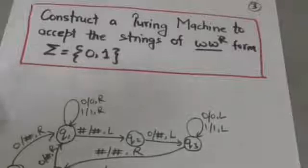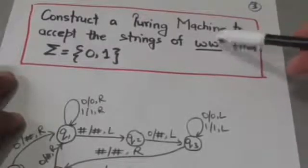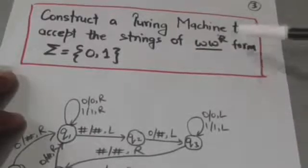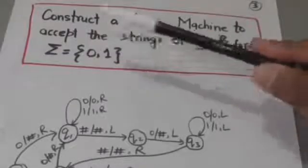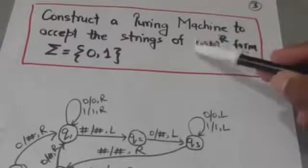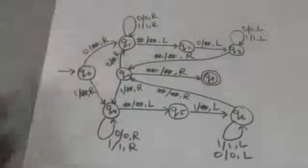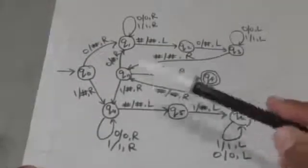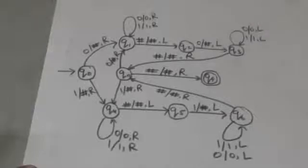Now let us construct a Turing machine to accept strings of the form WWR, where WR is the reverse string of W, and where the set of input symbols contains only two symbols — 0 and 1. It means the string will be made up of only 0 and 1. This is the required Turing machine which will accept strings of the form WWR, where the input symbols are 0 and 1.